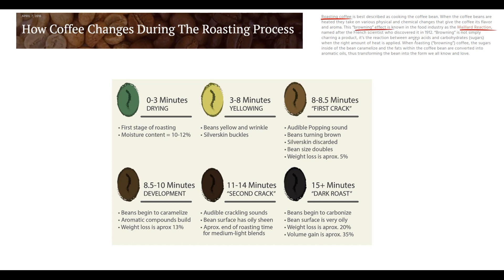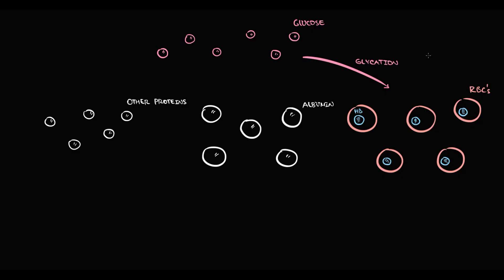One of the examples of the browning effect is coffee roasting. With increasing temperature, sugars inside the bean begin to caramelize, and the higher the amount of caramelized sugars in the bean, the darker the bean color becomes. Exactly this caramelization happens to proteins in the presence of glucose, and the higher the blood glucose level, the higher the rate of glycation. Glycation or caramelization brings nothing but problems to proteins.